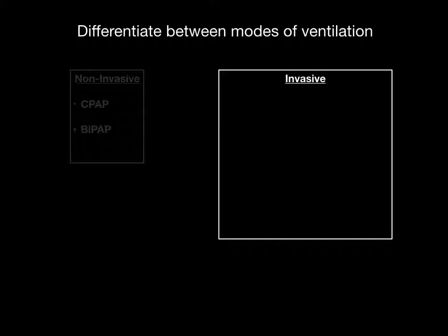Now let's move to invasive modes of ventilation, starting with the most support down to the least. I differentiate invasive ventilation into non-synchronized — classic control mandatory ventilation — where the ventilator simply delivers breaths based on the set rate per minute. We don't use this very often, but it's how ventilation started; it's extremely uncomfortable for an awake patient. We revert to control ventilation once a patient has been paralyzed and completely sedated. Most modes are synchronized, meaning the machine identifies when a patient is taking a breath and supports that breath.